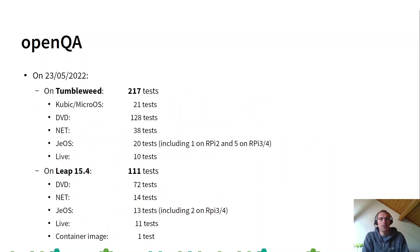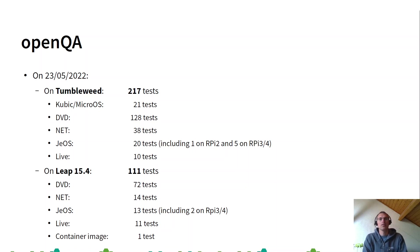Here you have the number of tests run on each snapshot. For Tumbleweed, we have more than 200 tests.